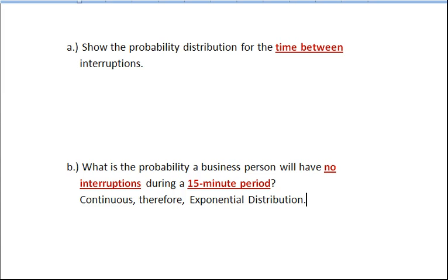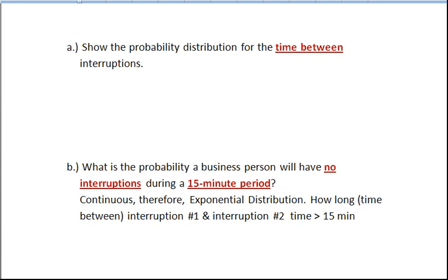Now it's helpful to think in this part of this problem that we're interested in how long before the next interruption. So in other words, how long between interruption number one and interruption number two. And what we're trying to understand is the probability that that time between will be greater than 15 minutes.